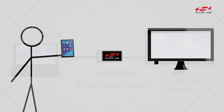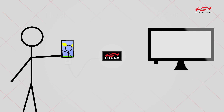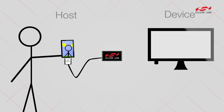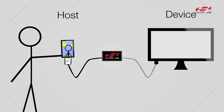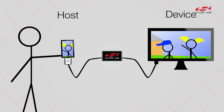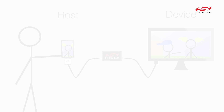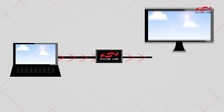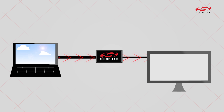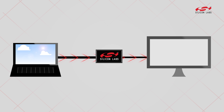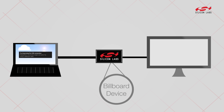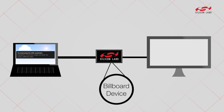The user need only connect the USB Type-C end into the host and connect the DisplayPort end to the monitor. In the event that a monitor is not supported by the host device, the billboard device within the dongle will detect this and allow for the user to be notified.